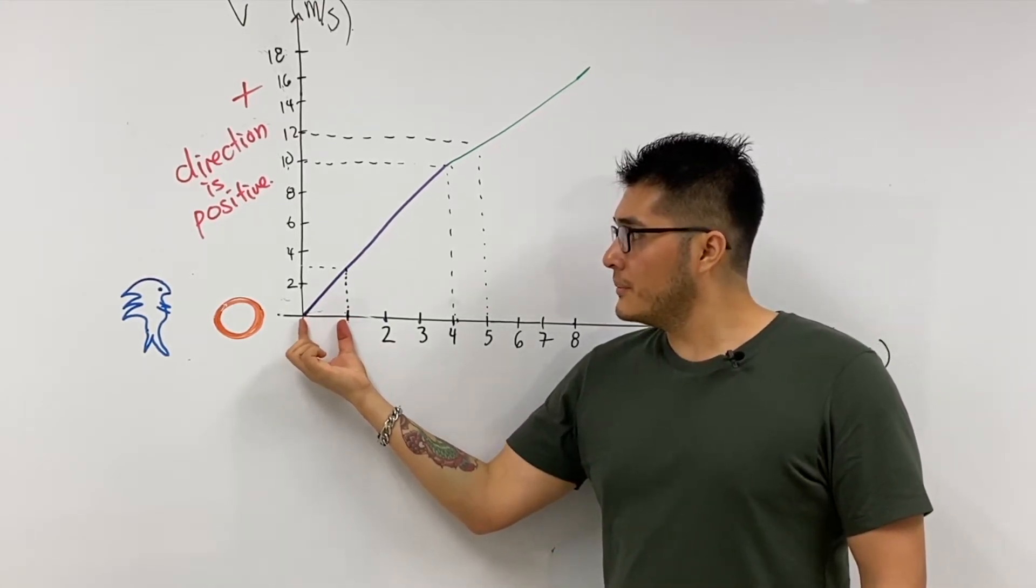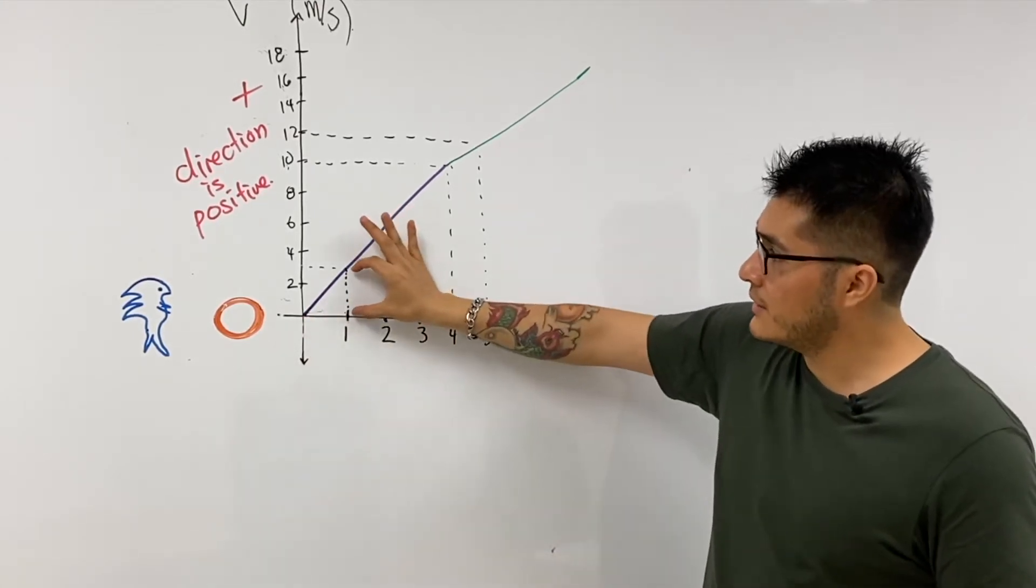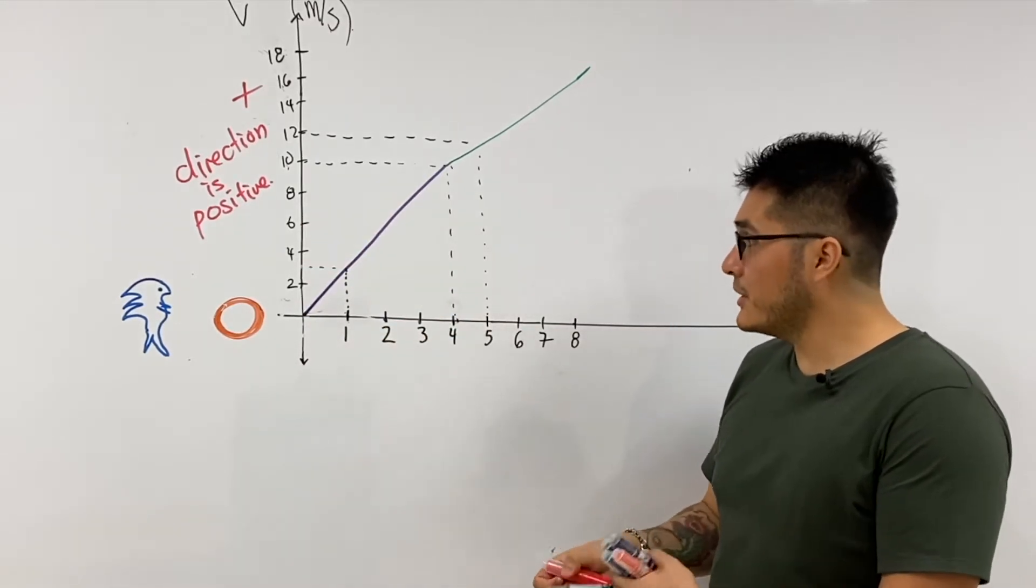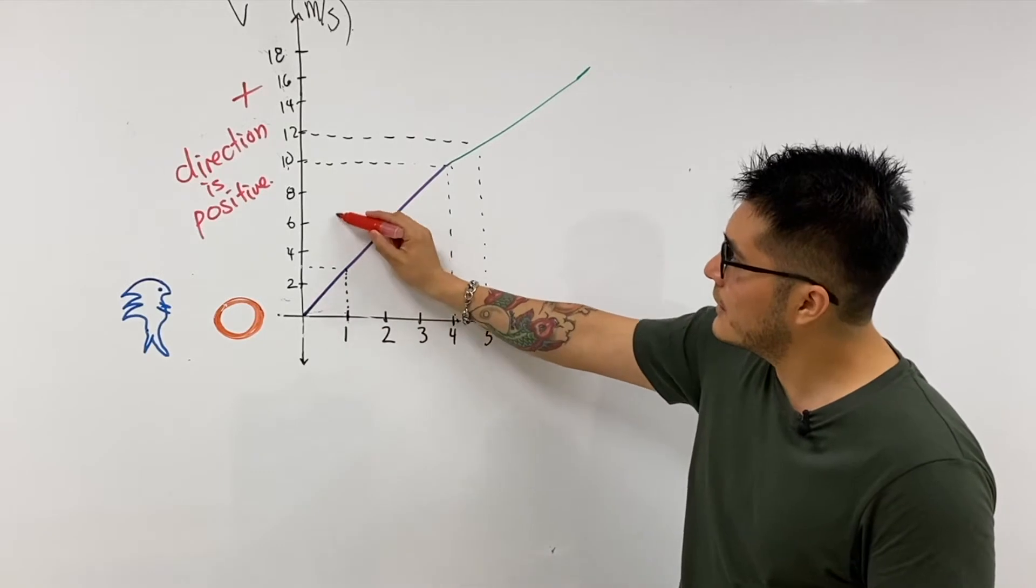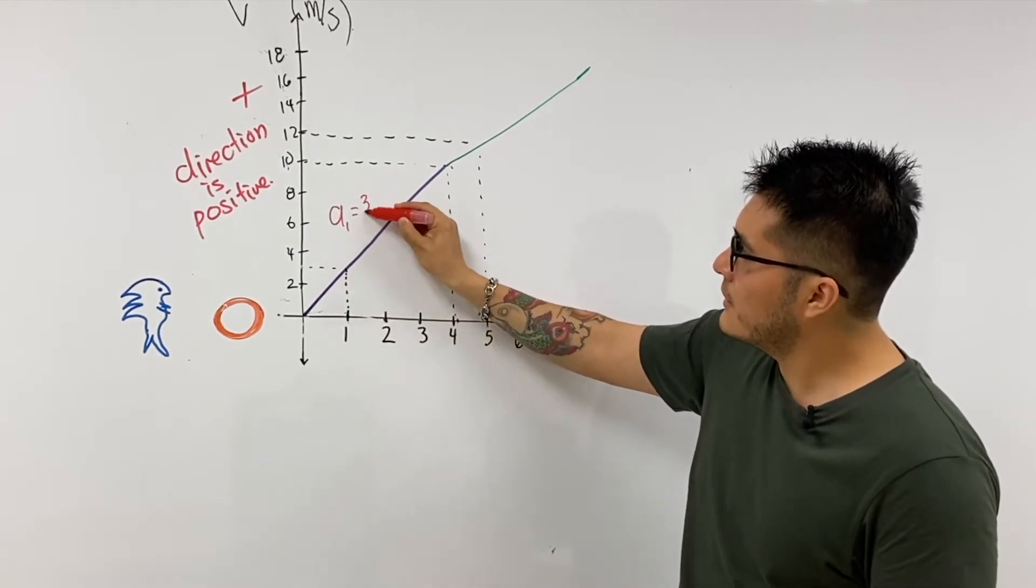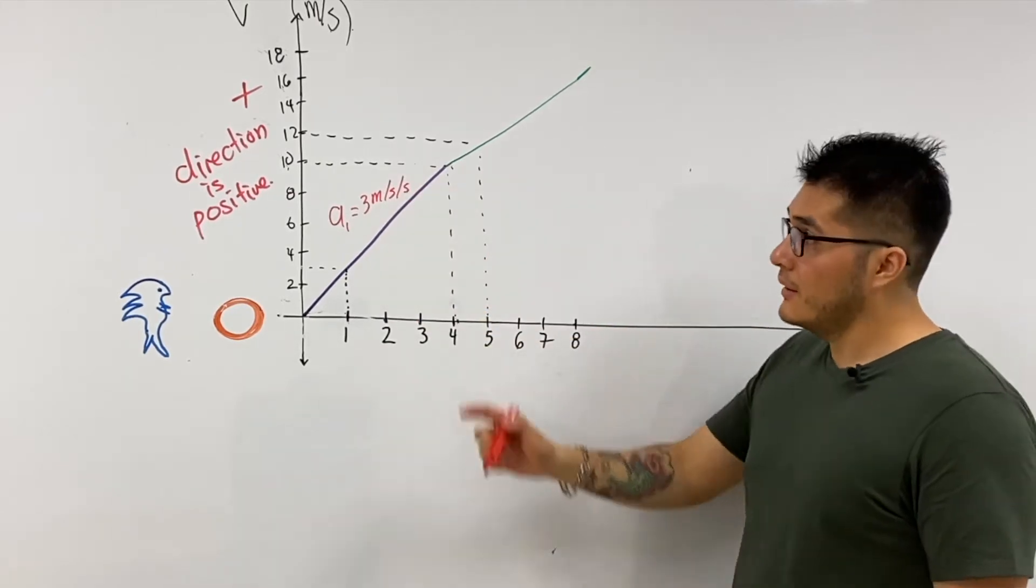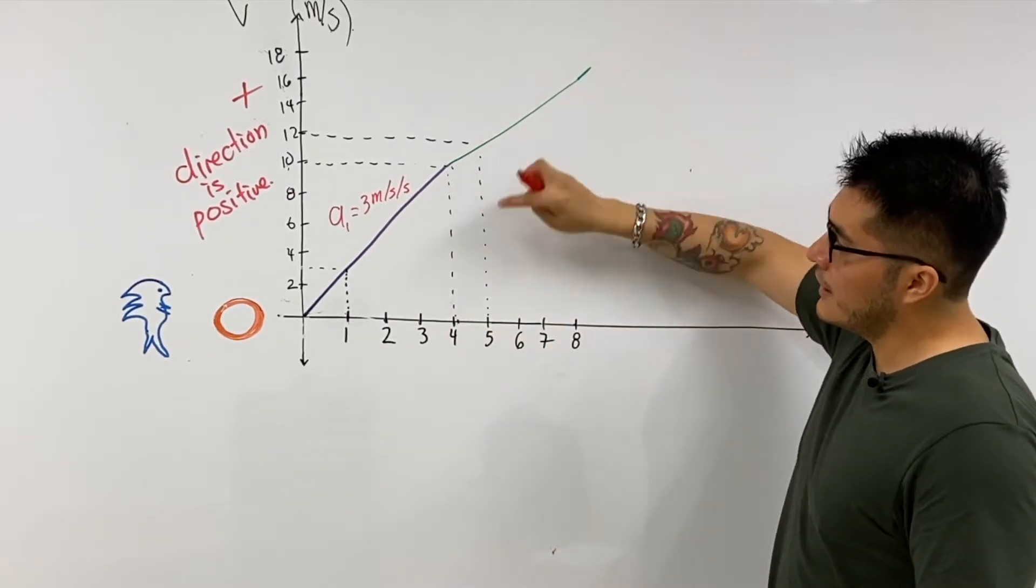Look at a one second interval. The change in velocity is three meters per second. So the acceleration from the first section, let's call this a₁, is three meters per second per second.